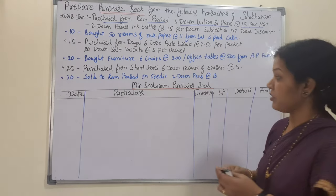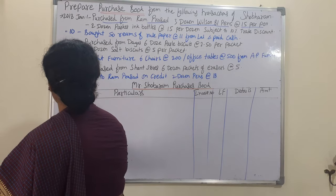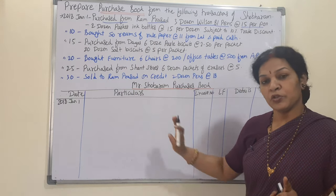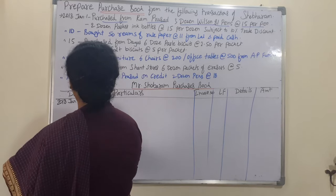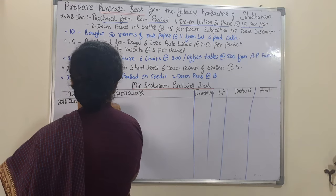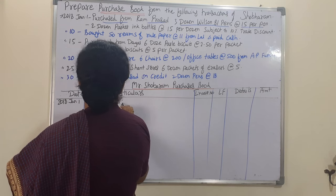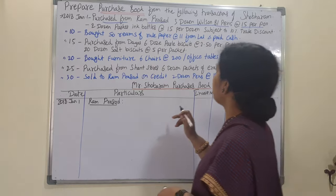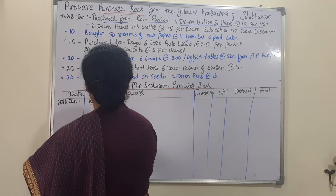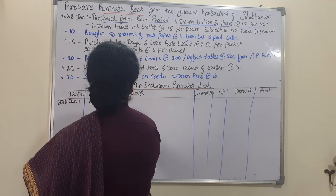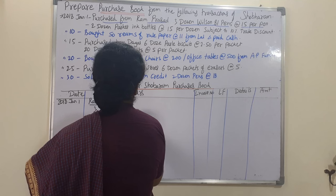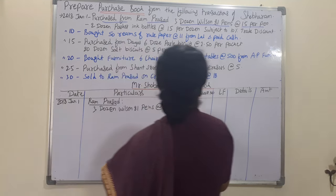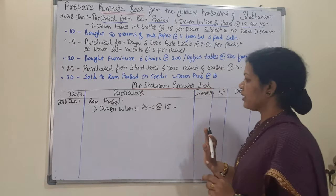This is the January 1st transaction. We are purchasing from Ram Prasad, so we write the name Ram Prasad. Under that in the details column we write what we have purchased: three dozen Wilson 81 pens at the rate of 15 rupees per pen, and two dozen Parker ink bottles.